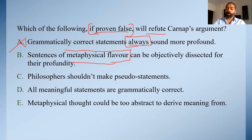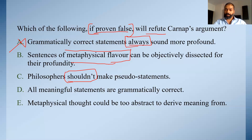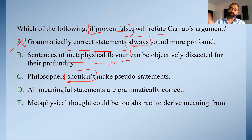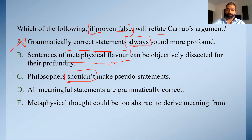Option C: philosophers should not make pseudo-statements. 'Should not' is the problem here — we can immediately eliminate this option, because the question is not about what philosophers should or shouldn't do, but about what they already do. Philosophers, when they write about metaphysics, make pseudo-statements — that is stated in the paragraph. Option C doesn't have any bearing on Carnap's argument in general, because Carnap's argument is about the meaning of that metaphysical writing, which Carnap thinks is zero. So you can eliminate this option.